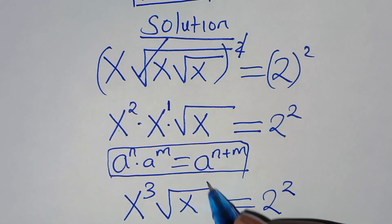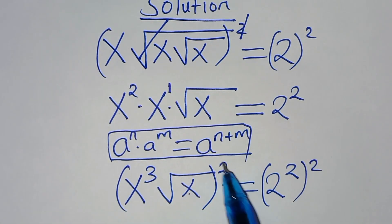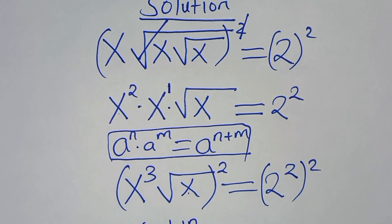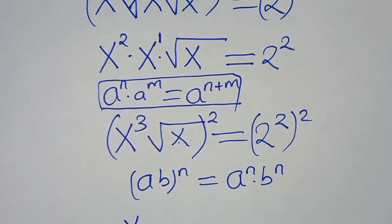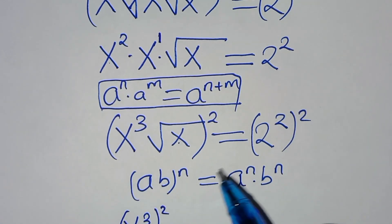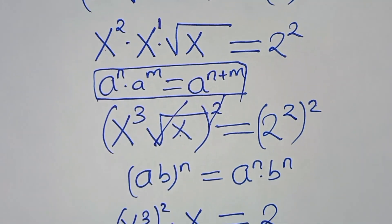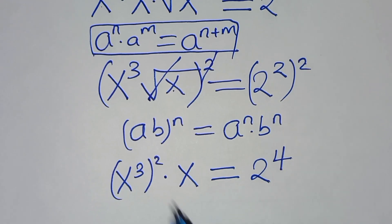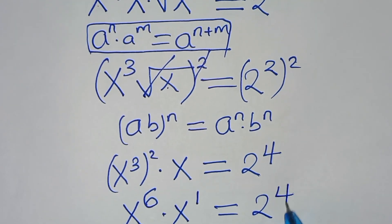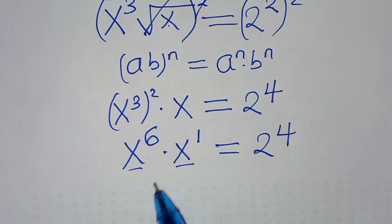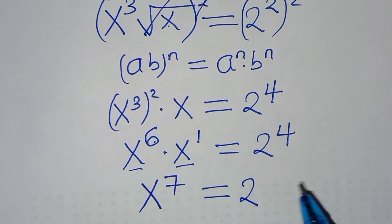The next step from here, again we square both sides, so that now x to power 3 times square root of x, squared. This is in the form of a times b raised to power n, which you can express as a to power n times b to power n. Applying this exponent property, here we have x to power 3 raised to power 2, times — we eliminate the square root sign — times x. This is equal to 2 to power 2 times 2, which is equal to 4. Now here we have x to power 6 times x — this is x to power 1 — equal to 2 to power 4. Since the bases are common, this implies x raised to power 6 plus 1, which is 7, equals 2 to power 4.